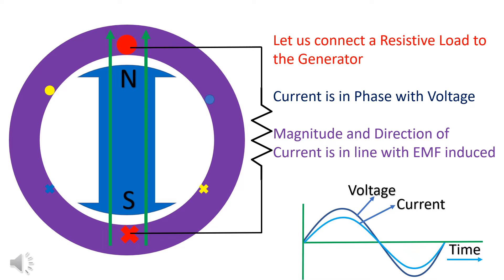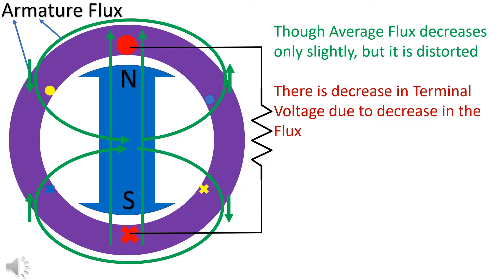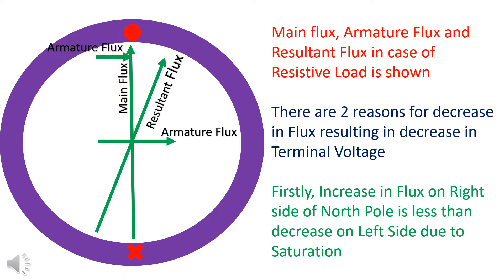Let us see what happens when the resistive load is connected to the generator. Voltage and current are in phase. Direction of current is same as that of the EMF. Applying right-hand thumb rule, armature flux is as shown. Flux increases on one side and decreases on the other side of the conductor. Though there is not much change in the average flux, it is distorted.